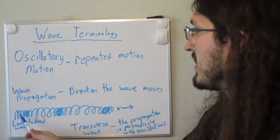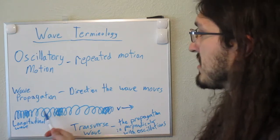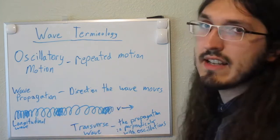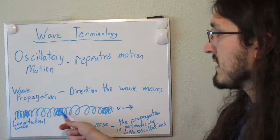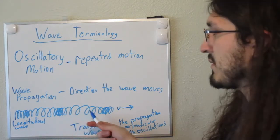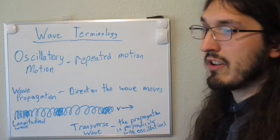These compressions are more dense in the medium that the wave is moving through, so like for sound waves, this would be densely packed air molecules, and these spread out parts would be less dense of air molecules.